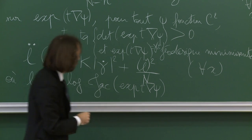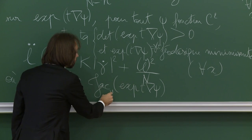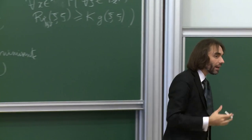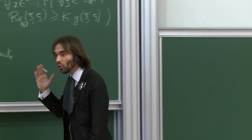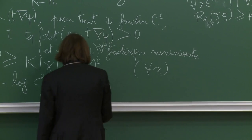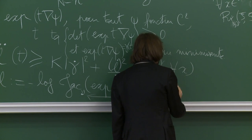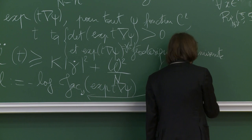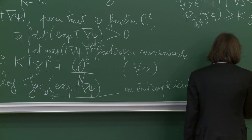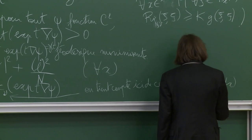Attention : le déterminant jacobien est ici calculé pour le volume ν et non pour le volume riemannien. Autrement dit, le jacobien tient compte du fait que la mesure de volume utilisée est dν = e^{-V} vol(dx) et non vol(dx).